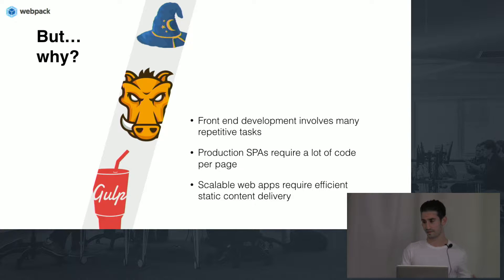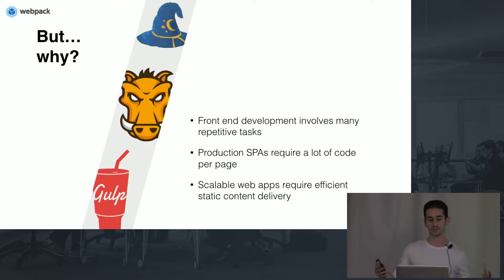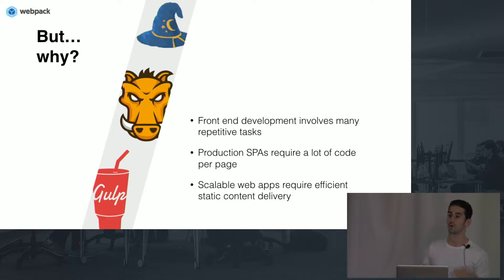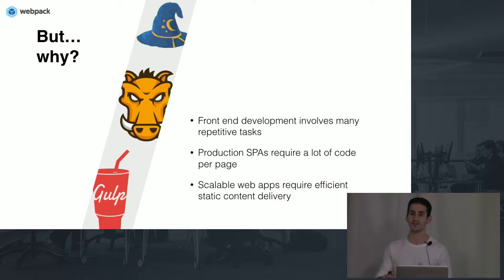Whenever we use a new tool, we have to ask ourselves: why are we using this tool in the first place? What problems is it actually solving for us? The first problem is that front-end development work is often very repetitive, especially when preparing our code for production. We might need to deduplicate assets, minify code, or preprocess things like turning JSX into JS. These are all very repetitive tasks.